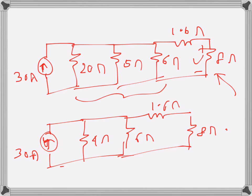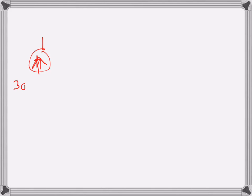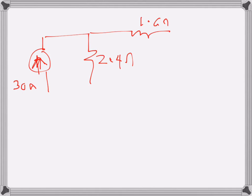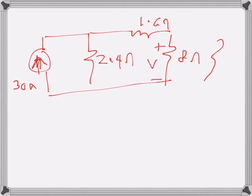Now 4 ohms and 6 ohms are in parallel: 4 times 6 is 24, divided by 4 plus 6 which is 10, giving 2.4 ohms. So we now have a 30-amp current source with a 2.4-ohm parallel resistance, followed by 1.6 ohms and 8 ohms. We cannot simplify further because we need the voltage across the 8-ohm resistance.